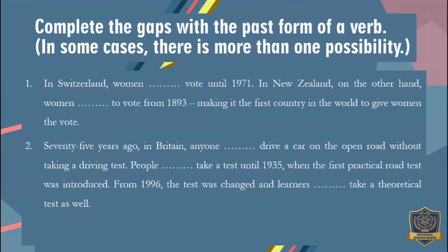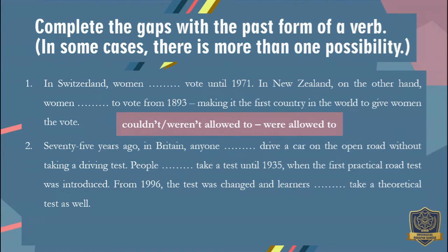In Switzerland, women couldn't or weren't allowed to vote until 1971. In New Zealand, on the other hand, women were allowed to vote from 1893, making it the first country in the world to give women the vote. So number one is that in Switzerland, women were not allowed to or could not vote, whereas in New Zealand, women were allowed to vote.